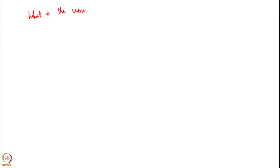Welcome back. In the previous lecture we asked ourselves what is the sufficient statistic which can be used for every partially observed Markov decision process or partially observed stochastic control problem. The question for this lecture is: what is the universal sufficient statistic for any partially observed problem?